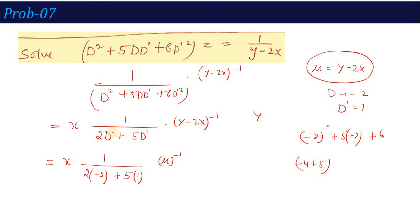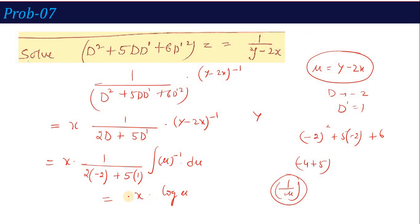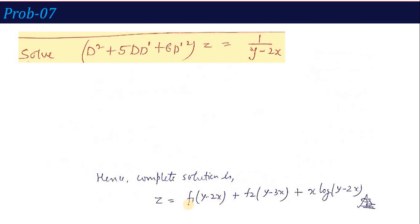Since the operator is of order 1, we integrate u⁻¹ = (y-2x)⁻¹ once, giving log(u) = log(y-2x). The constant from the denominator evaluates to 1, so PI = x·log(y-2x). The complete solution is: z = f₁(y-2x) + f₂(y-3x) + x·log(y-2x).